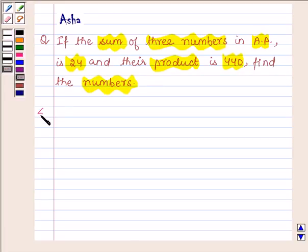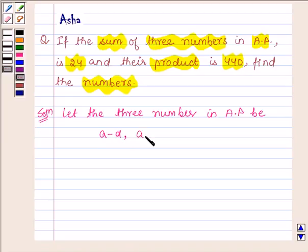Let us now begin with the solution and let the three numbers in AP be A minus D, A, and A plus D. So here the common difference is D and let this be greater than 0.